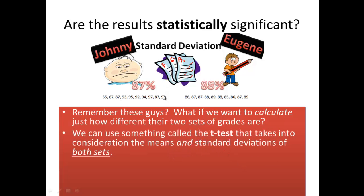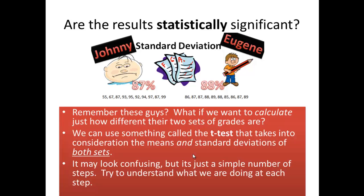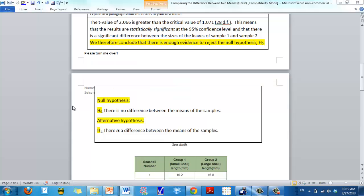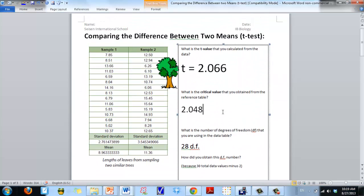So, the t-test actually takes the means and the standard deviations into consideration and gives us a magic number that we can use to determine if the results are significantly different or not. I'm going to jump over here to another document really quickly and I'm going to explain these by jumping back and forth. So, here's a sample set of data.